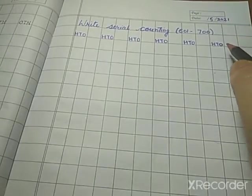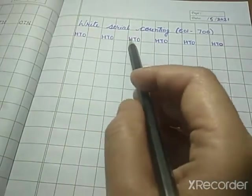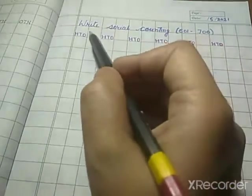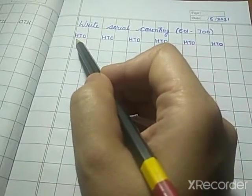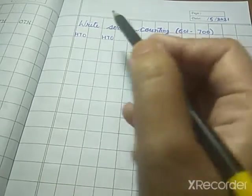So first you will write the place values as I told you earlier, right? So this is 1's place, 10's place, 100's place. Right?